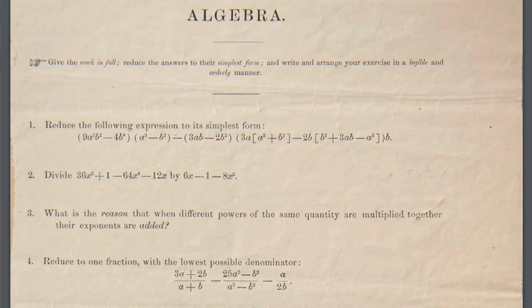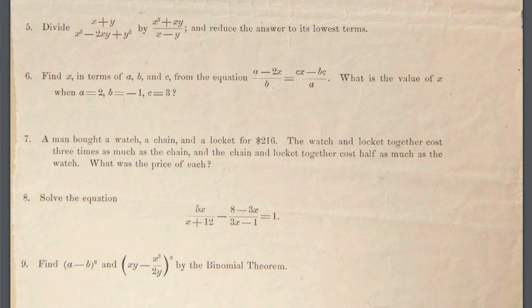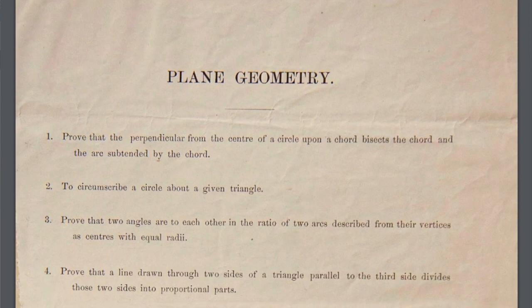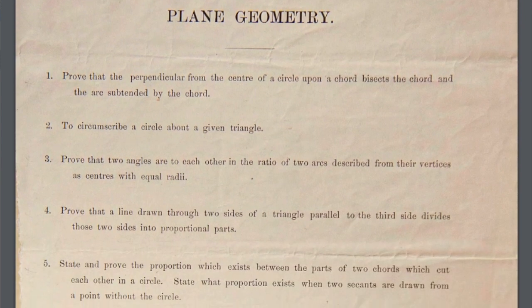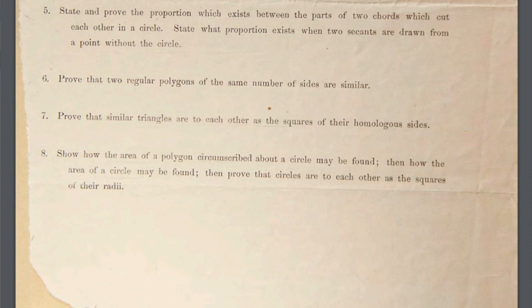This was 1869, and in the section on logarithms and trigonometry it asks what is the logarithm of one in any system, or of any number in any system of which that number is the base. It moves on to algebra — a lot of equations — and then plane geometry. One of the questions is to prove that a line drawn through two sides of a triangle parallel to the third side divides those two sides into proportional parts. So this is an eight-page exam that Harvard gave in 1869 and it's clearly very different from what you would see today.